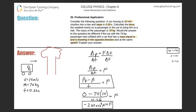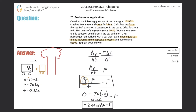Now for Part 2: instead of hitting a stationary tree, this car collides with an identical yellow car of the same mass, moving in the opposite direction at the same speed. The yellow car's velocity is therefore negative 10 m/s. We use the same force formula, but now we need to determine the final momentum after this collision.